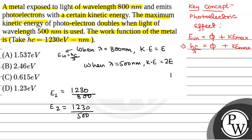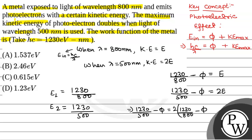So we will put two equations. First will be 1230 by 800 minus phi, that will be equal to E. From these two equations, we will have 1230 by 500 minus phi equals 2 times 1230 by 800 minus phi.